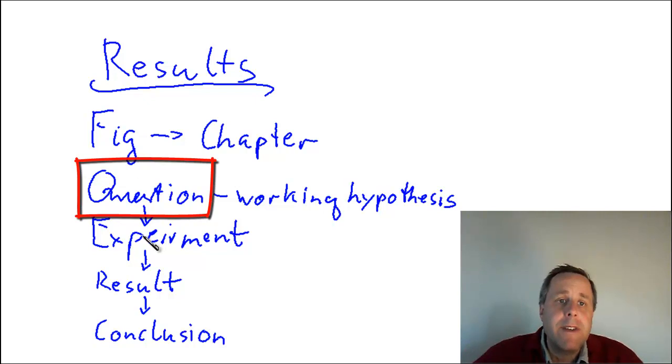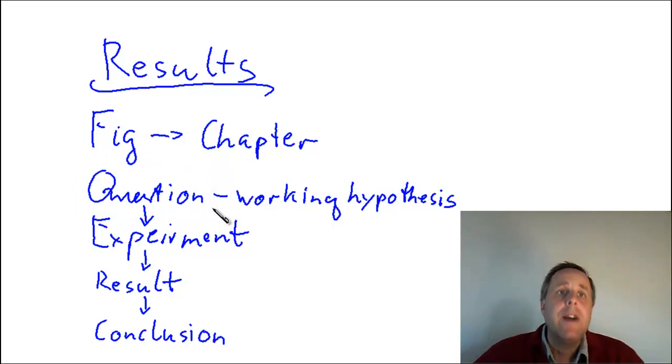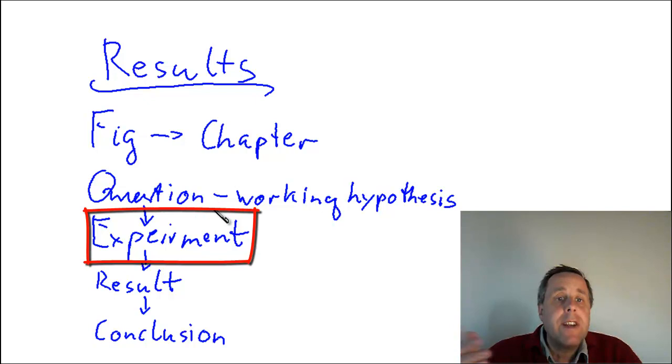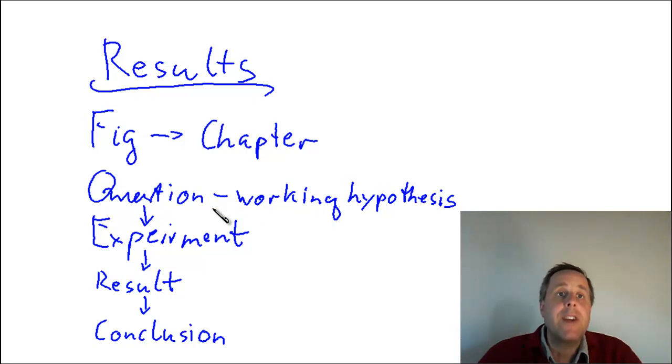That's precisely the question that you need to write down for your result as well. The question in this case would be: how much does Peter have to pay altogether? Then you write down how you were translating this question into an experiment. Or back then at school, it was how you were translating that question into a mathematical equation. In this case, the mathematical equation would be 3 times 5.